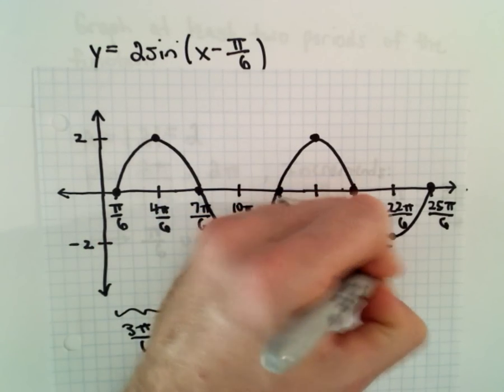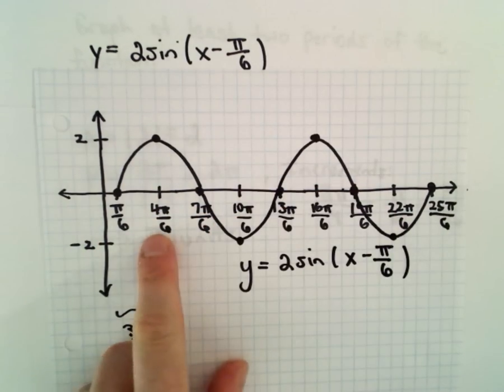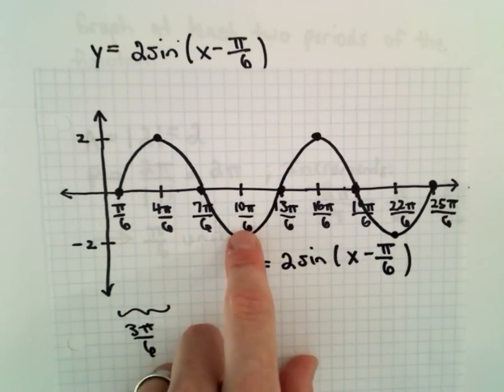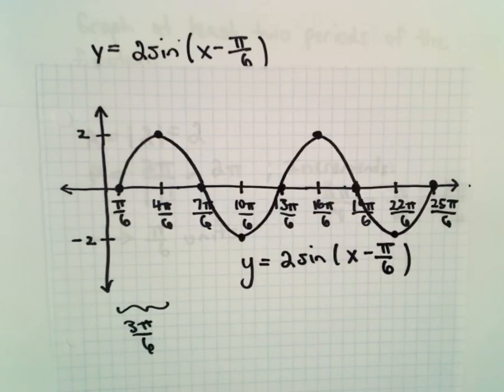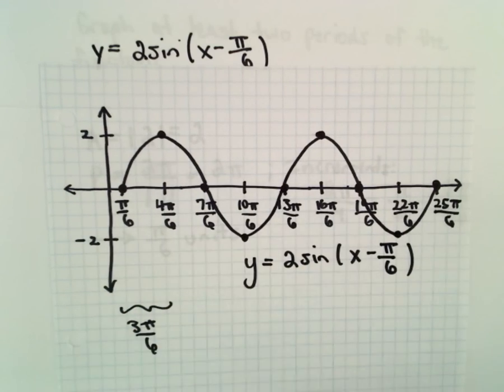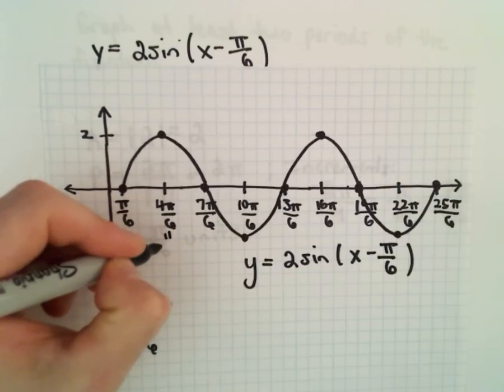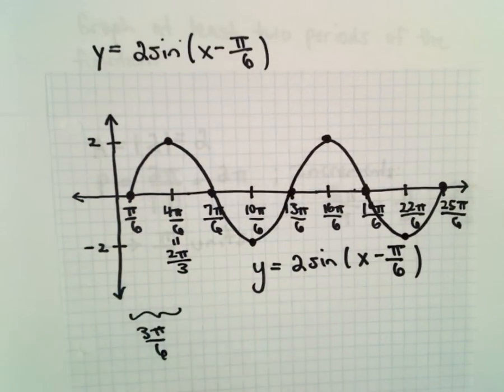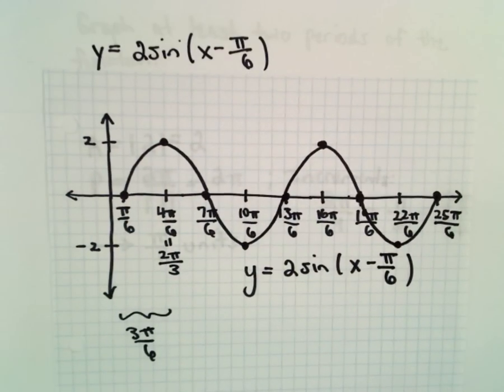Again, you can certainly reduce the values on the x-axis. You know, 10 pi over 6, hey, that's 5 pi over 3. But if you looked over at me on my graph, you would see exactly this. And maybe I would underneath have them reduced, but just to get the correct graph, this to me is the easiest way to do it.